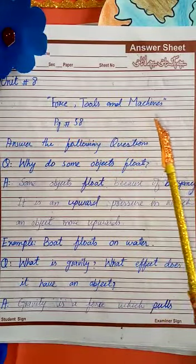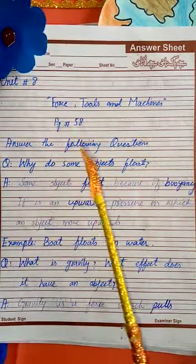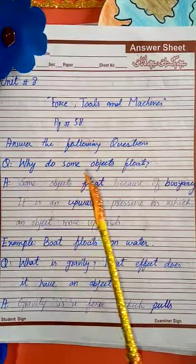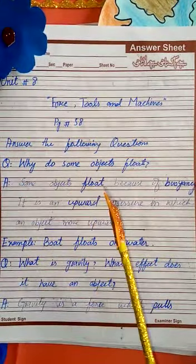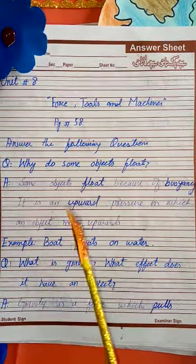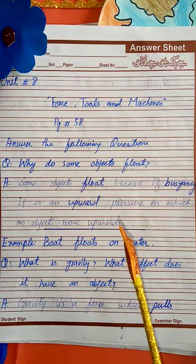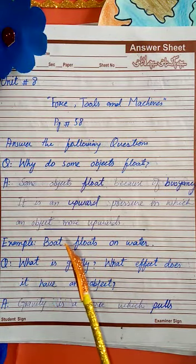Unit eight: Force, Tools and Machines, page number 58. Answer the following questions. Question number one: why do some objects float? Because of buoyancy. It is an upward force in which an object moves upwards. An example is a boat floats on water.